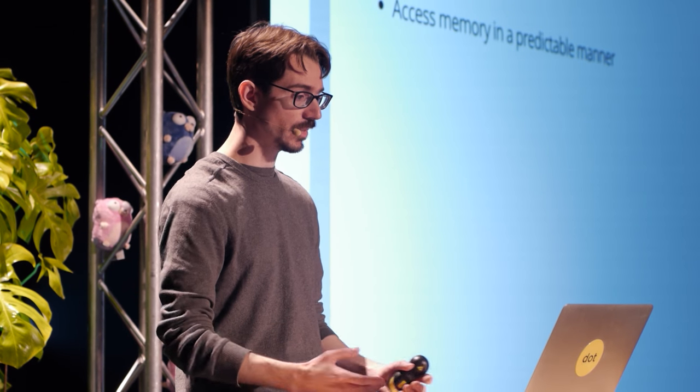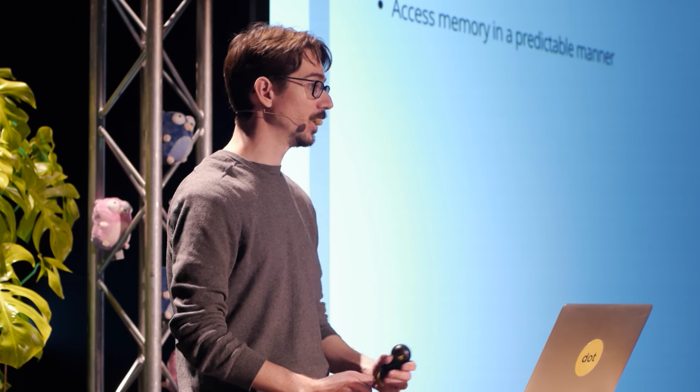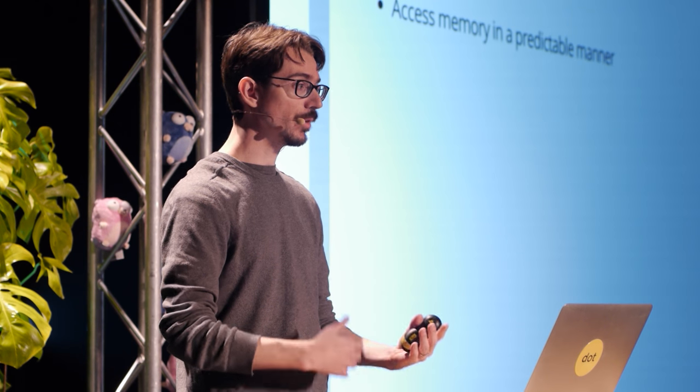The two basic strategies are: store less data, and access the memory in a predictable manner. If you store less data, then you can fit more data into your cache. I had one program that I sped up about 15% by changing a slice I was accessing very frequently from a slice of int64s to a slice of int32s — simply because all of that data was faster to get into the cache because there was less of it.